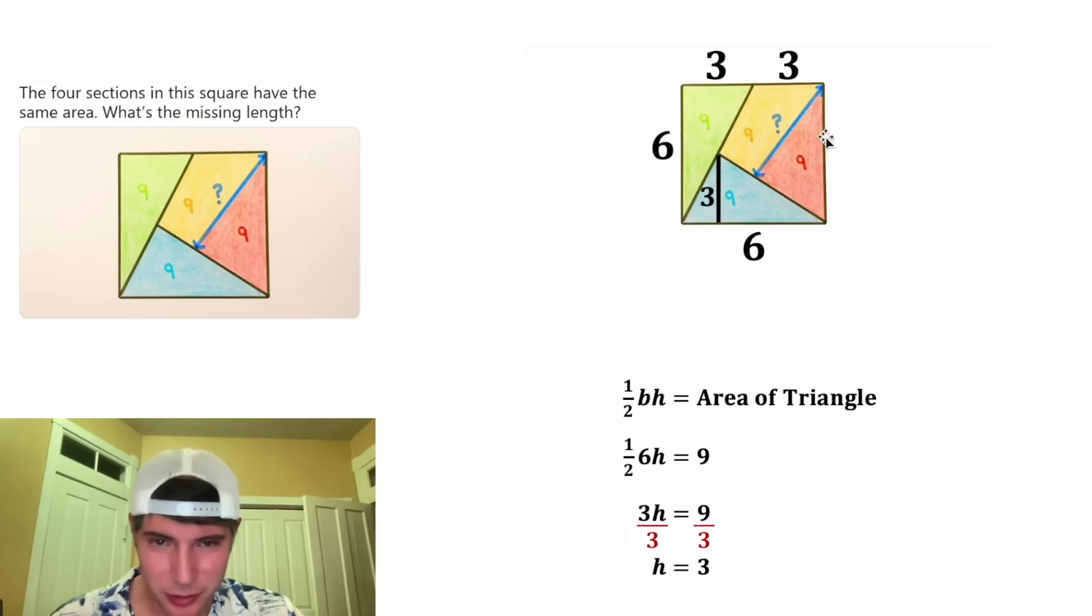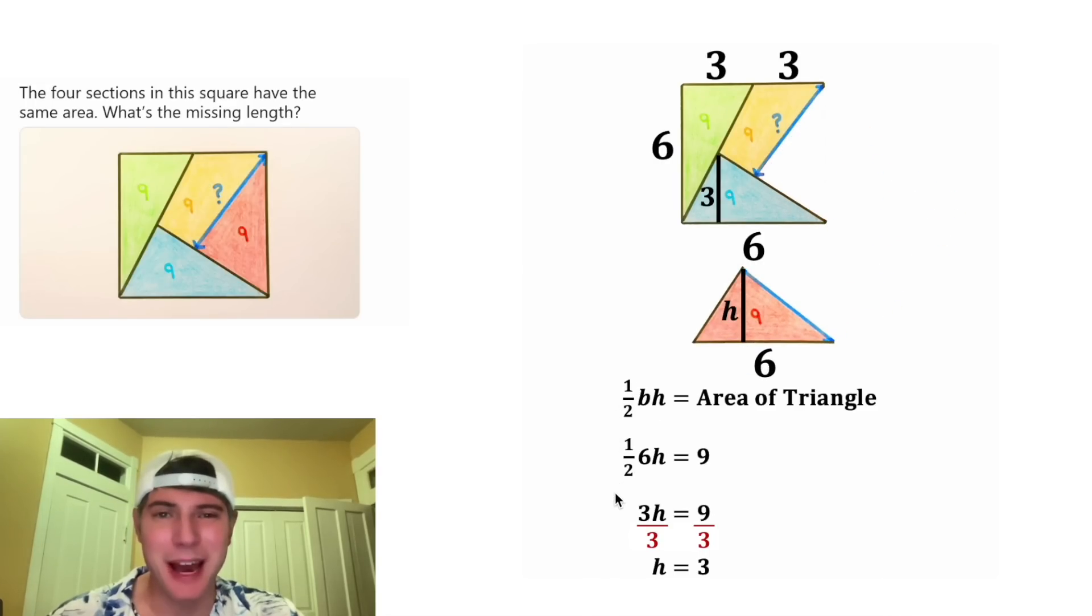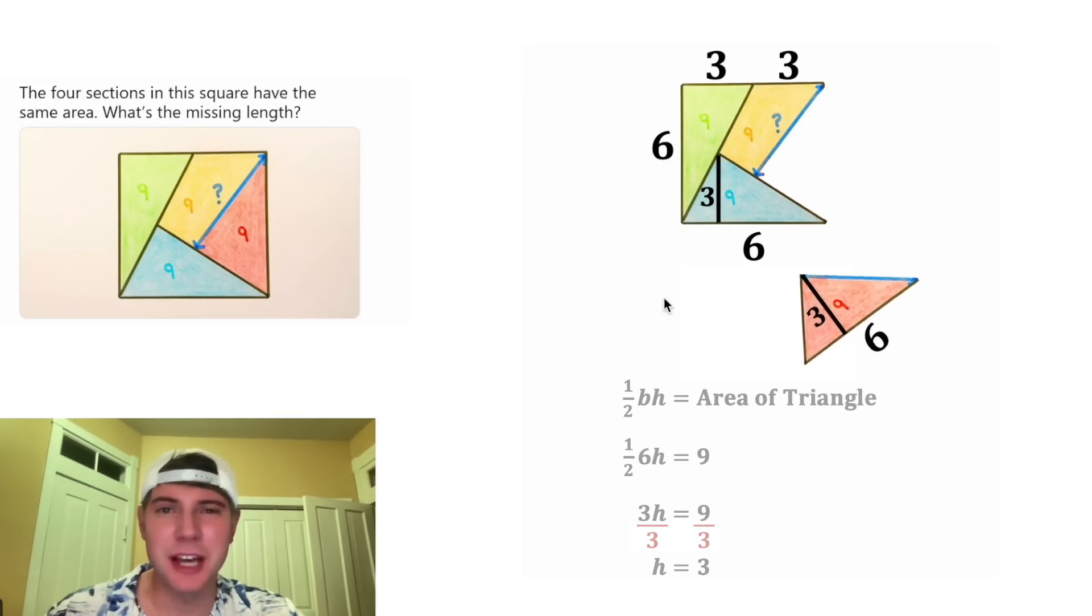We have one more triangle with a full side, so let's label this 6 and pull out that triangle. Let's draw the height of this triangle and call it h. It's going to be the exact same math again. Since the base is 6 and the area is 9, the height is going to equal 3. Now let's put that triangle back.